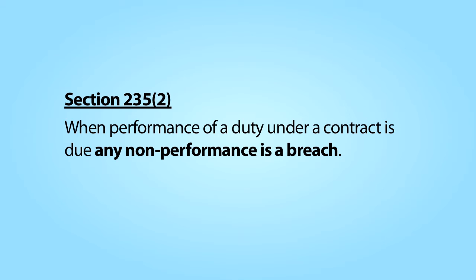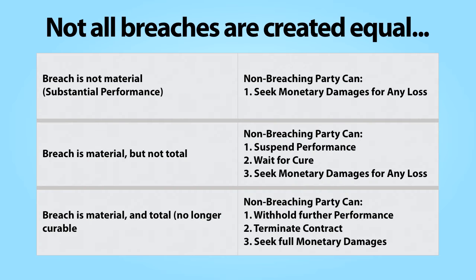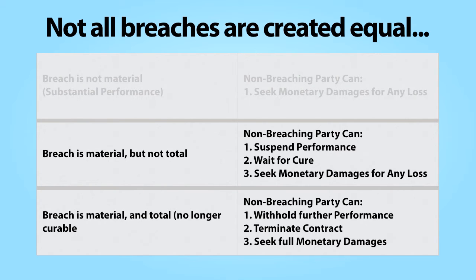Breaching a contract allows the non-breaching party to sue for damages that resulted from the breach. But not all breaches are equal. Some breaches impair the value of the contract to the non-breaching party to a much greater extent than do other breaches. Accordingly, depending on its severity, contract law allows different responses to a breach from the non-breaching party. The most severe breaches are material breaches. A material breach undermines the very value of the contract to the non-breaching party and disappoints the underlying expectations that led that party to enter into the contract in the first place.